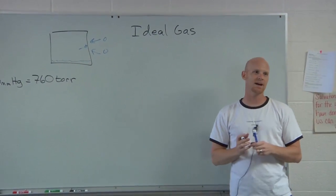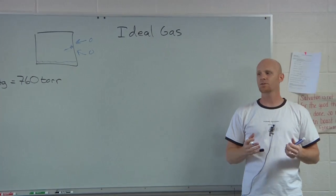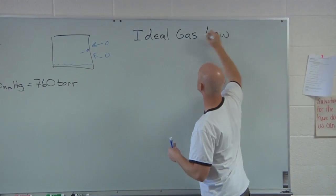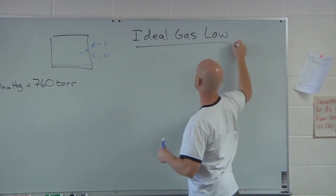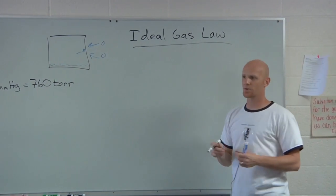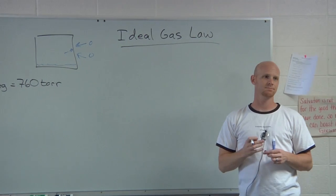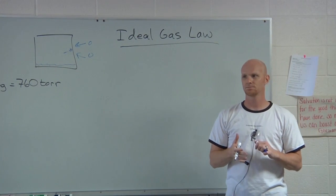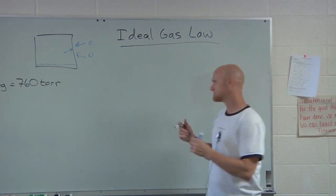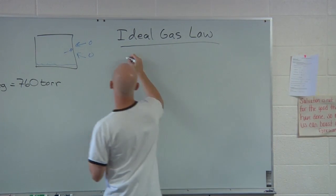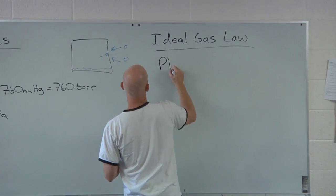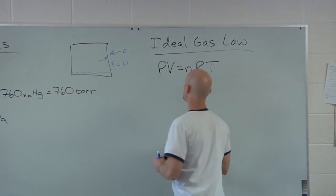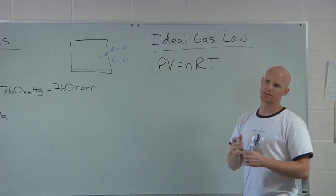Let's take a look at the ideal gas law. PV = nRT. P stands for pressure, V stands for volume.